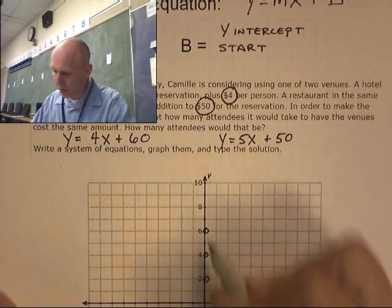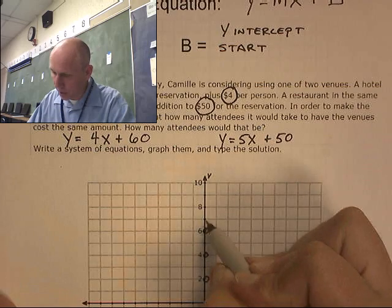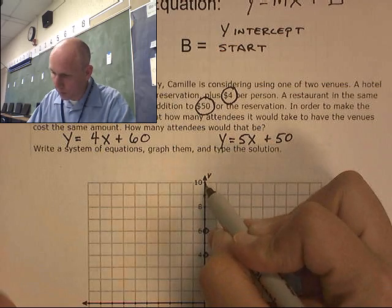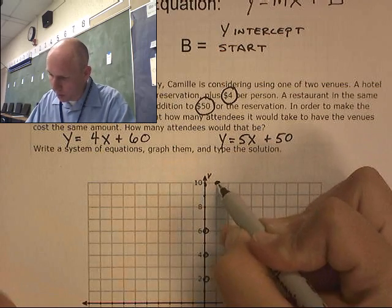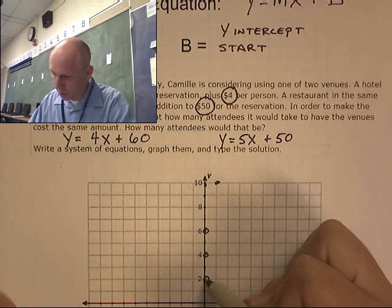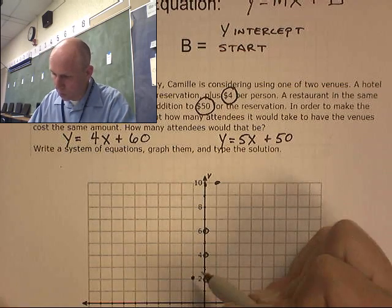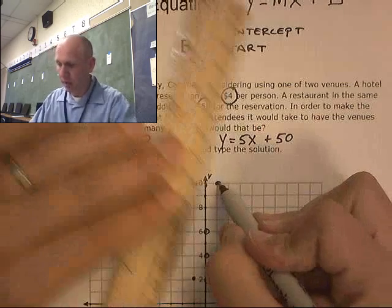So, I'm going to start with 60, and I'm going to go up 4 over 1. There it is. We're down 4 over 1. There's my first line.